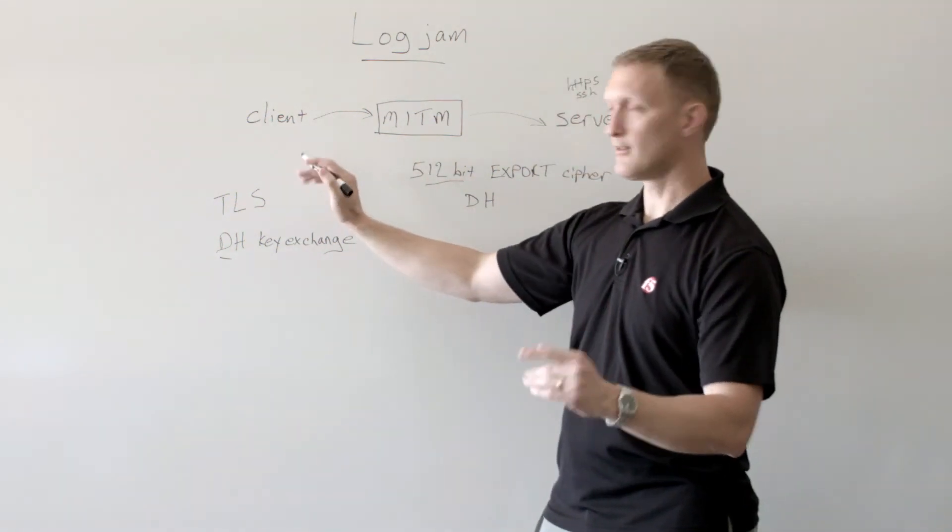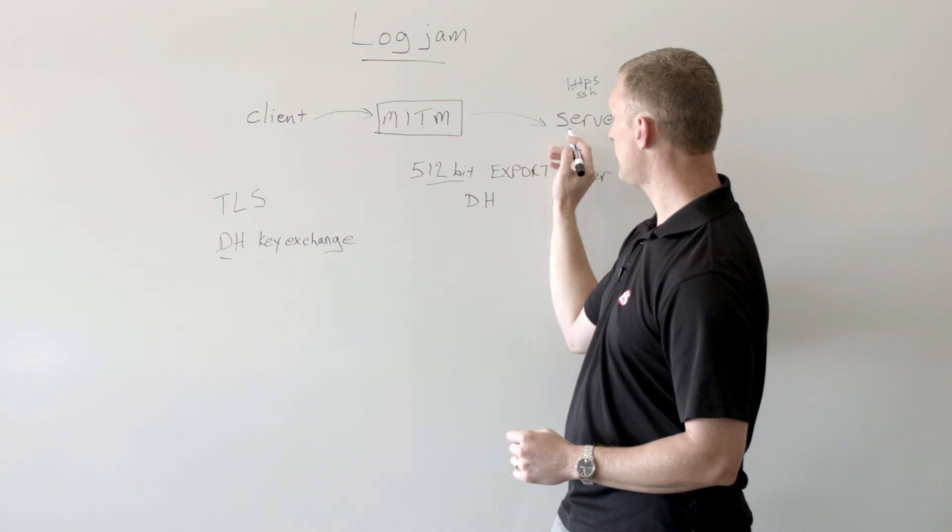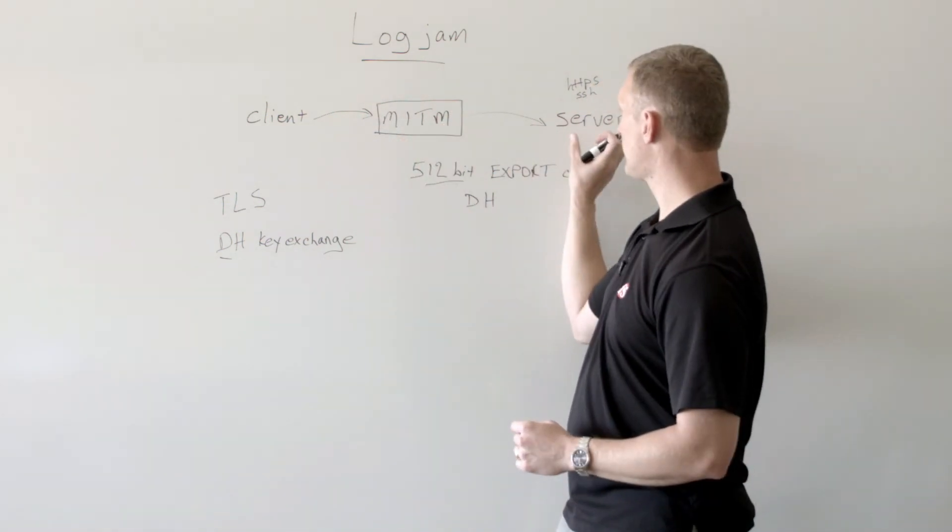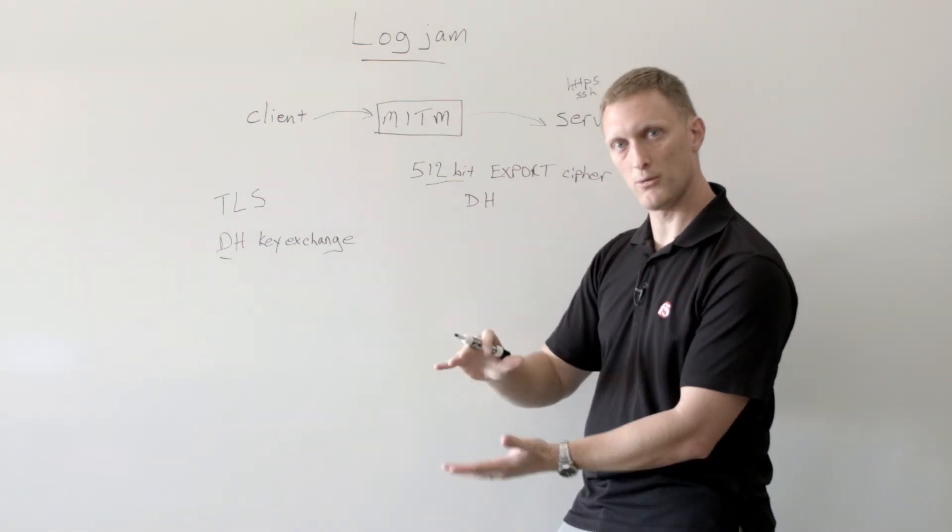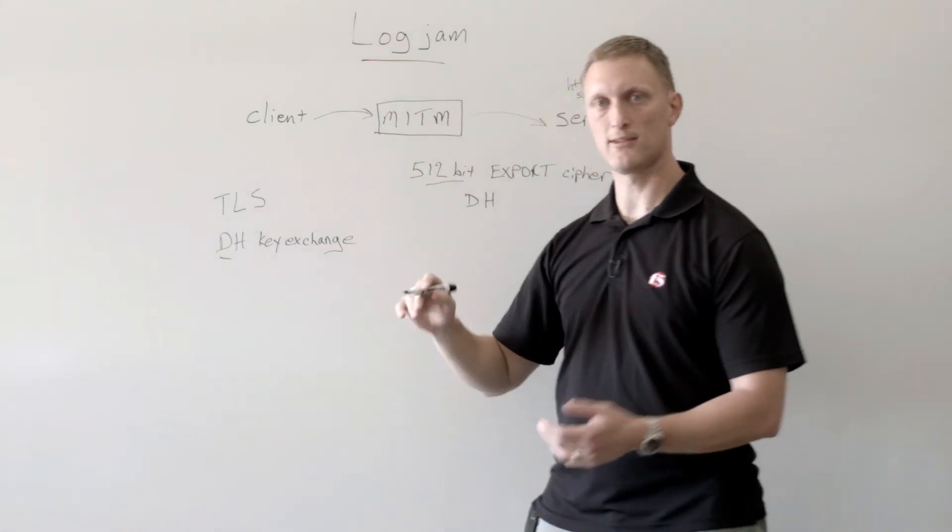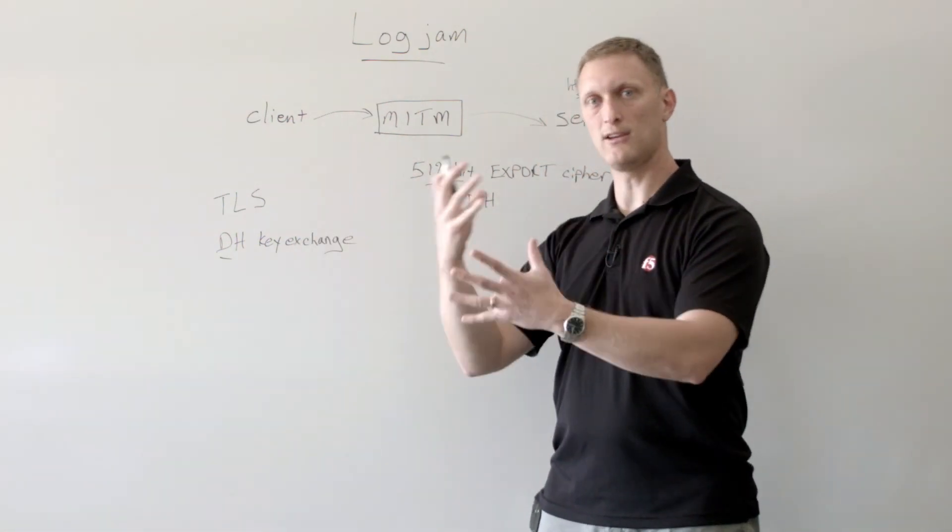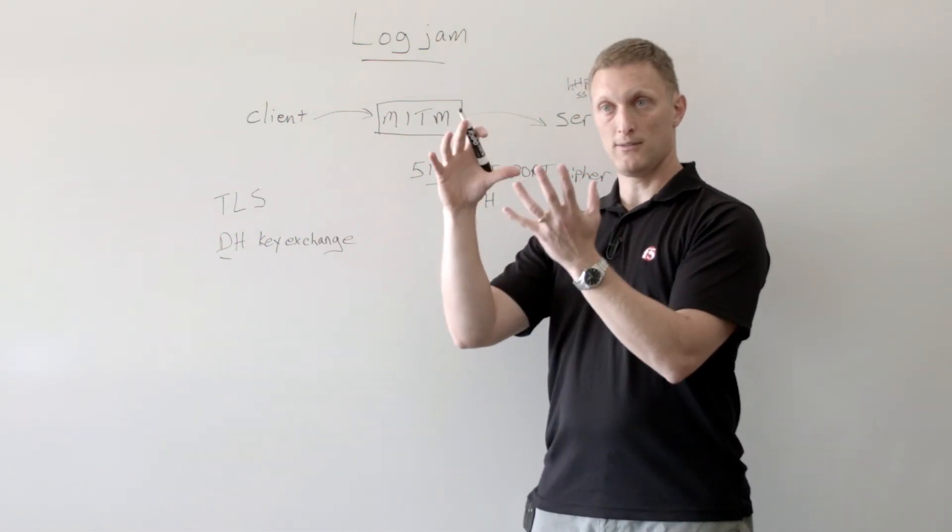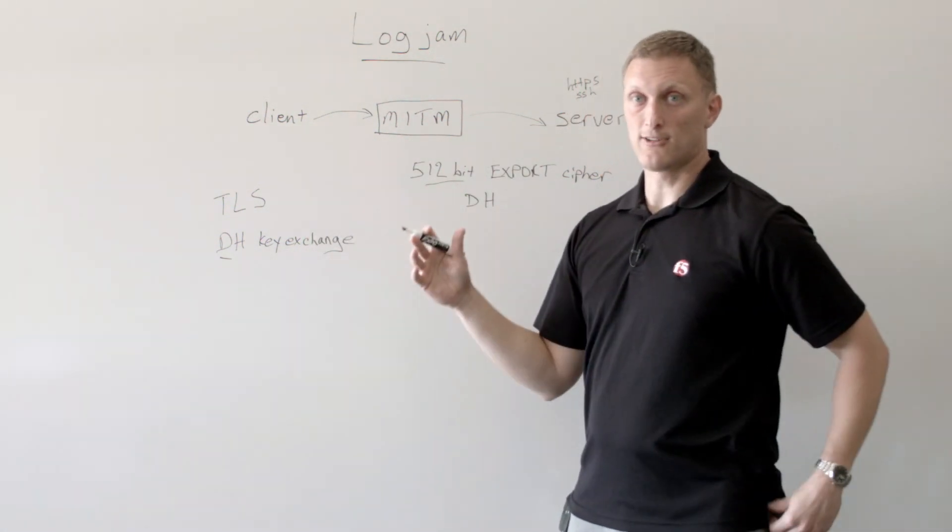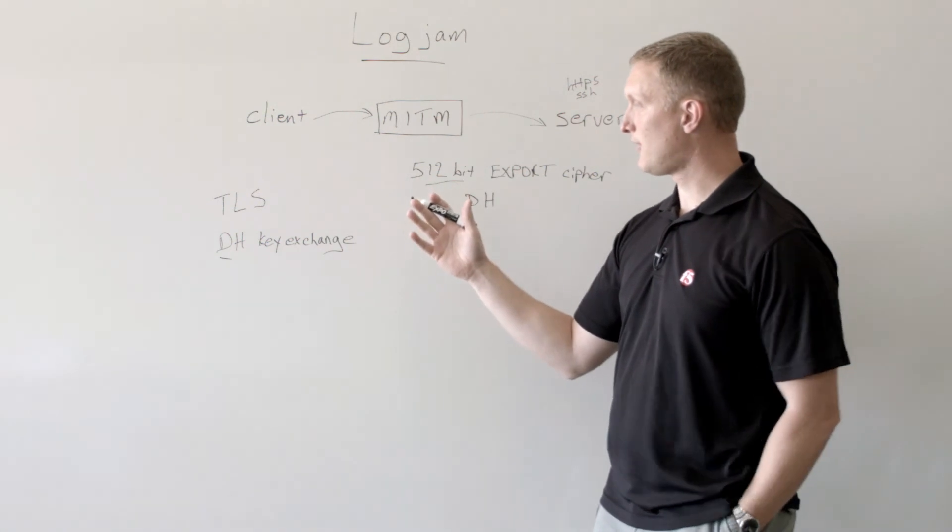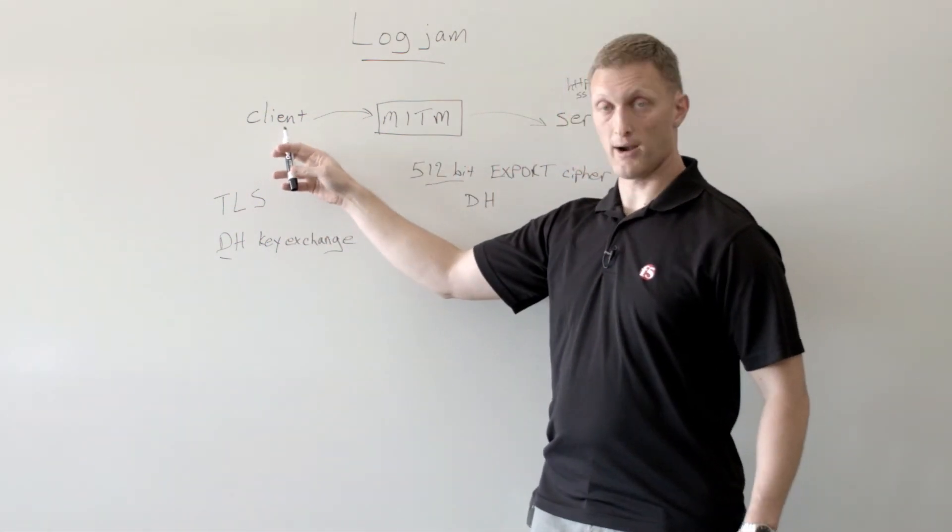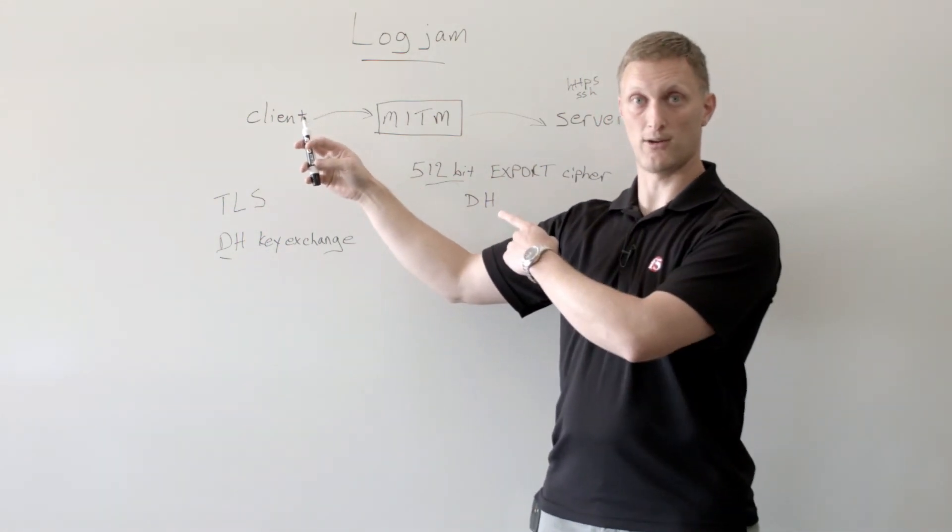So essentially what happens is client is requesting to server. Man in the middle intercepts that request. Server says, hey, you want to have this lower level, this weaker encryption, so okay, fine. And he sends that back. And now the client says, okay, we're going to be doing this key exchange at the 512-bit Diffie-Hellman export mode level, which is not very secure. And so there are analyzers out there that you can use to see if your browser, if the client browser is affected by this, which most modern ones are.